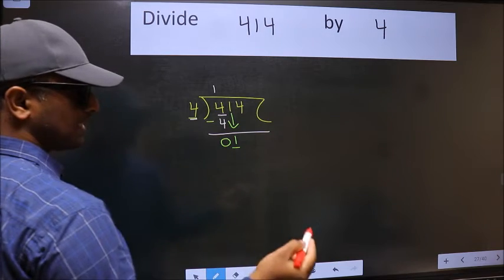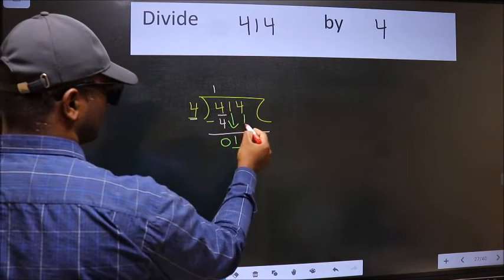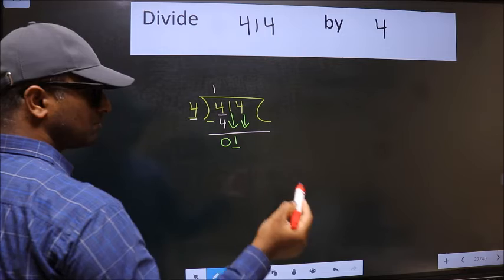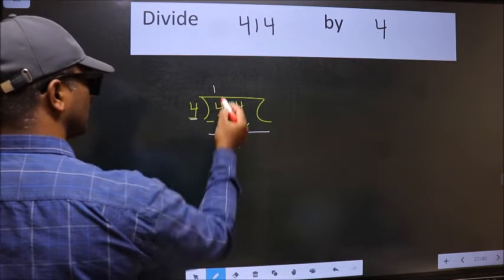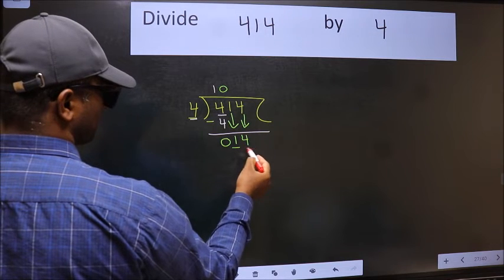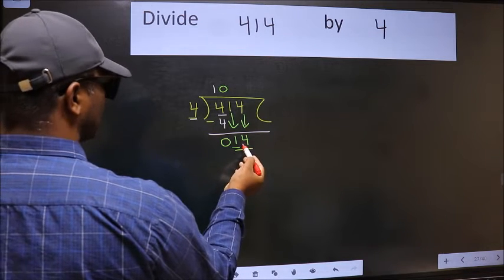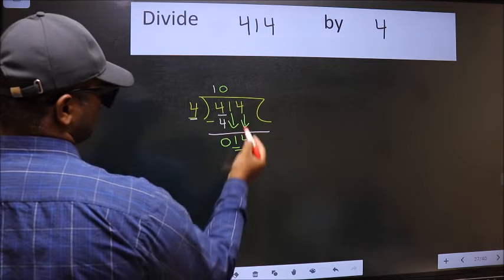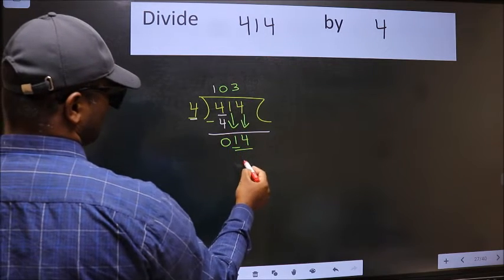So we should bring down the second number. The rule to bring down the second number is we should put 0 here. Then only we can bring this number down. Now 14. A number close to 14 in the 4 table is 4 times 3, which is 12.